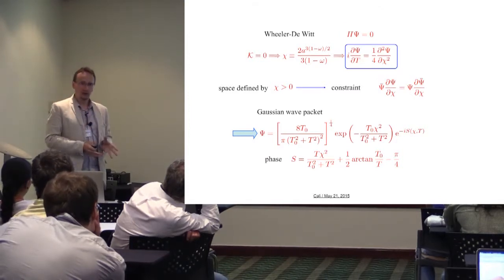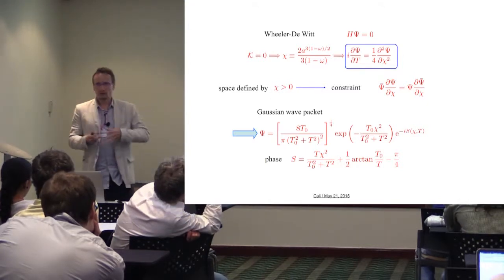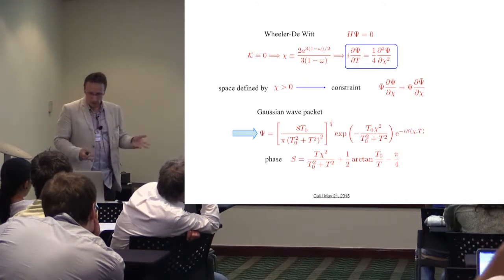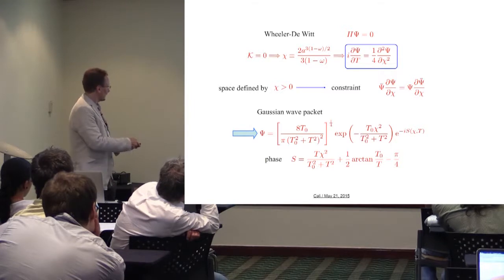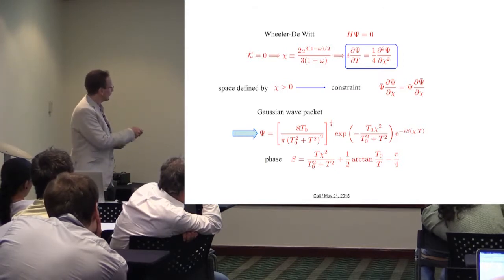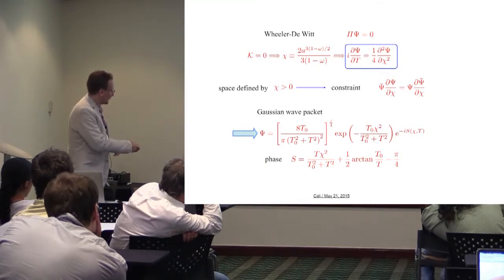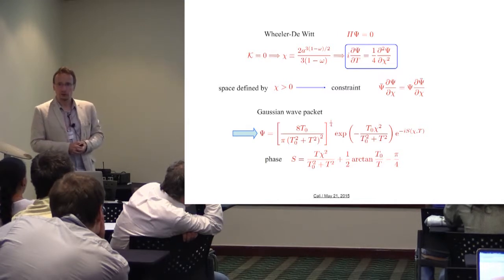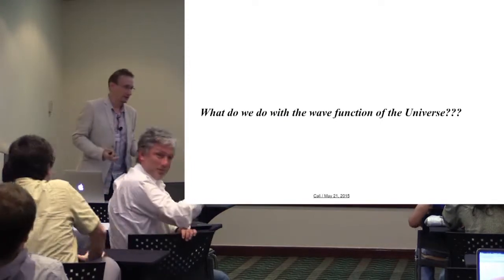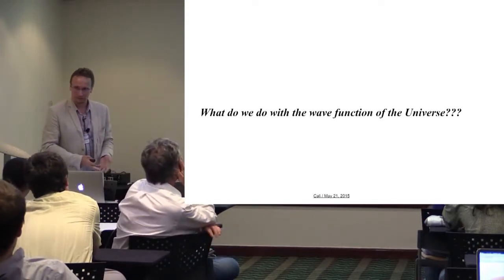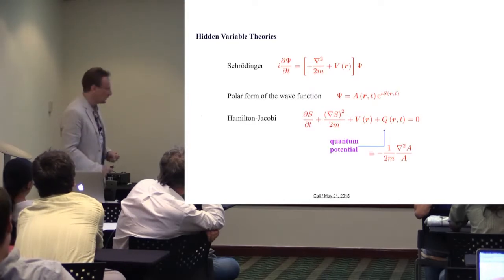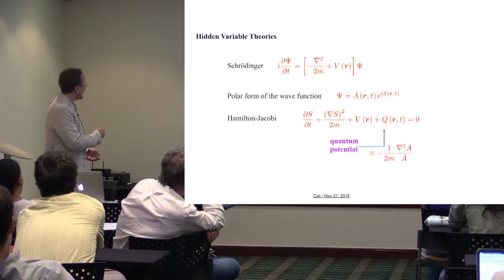Implementing the constraint that the scale factor is positive, you can solve the equation under this constraint and end up with a Gaussian wave packet — the complete solution in terms of t (the time) and x (the scale factor), with the full wave function and its phase. Now you have the wave function of the universe. The question is: what do I do with that? I have the wave function of the universe, which is essentially meaningless by itself — I need to derive the probability of observing the universe in whatever state. So we need to go one step further, and that is where I'm going to introduce the hidden variable theories.